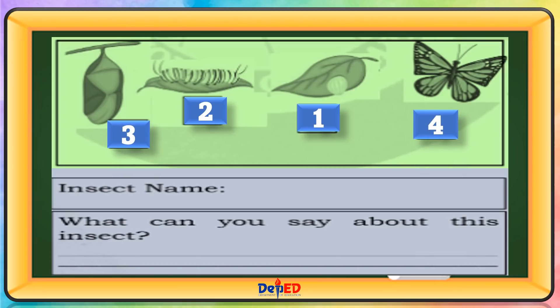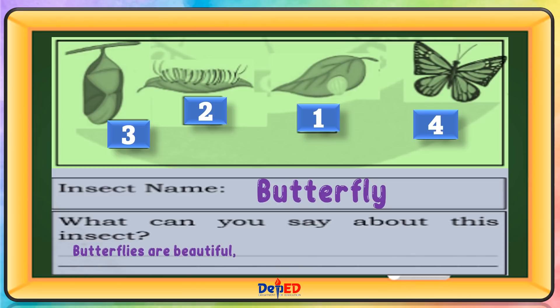Insect name: Butterfly. What can you say about this insect? Butterflies are beautiful flying insects with large scaly wings.